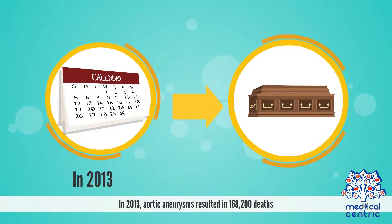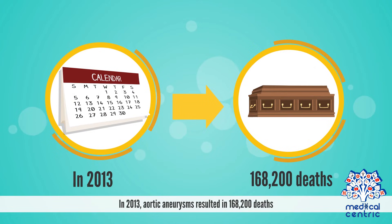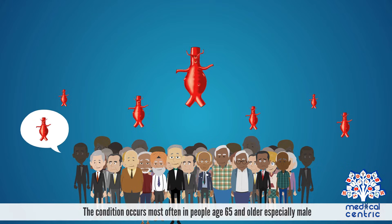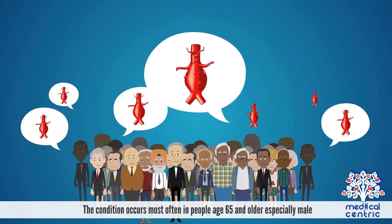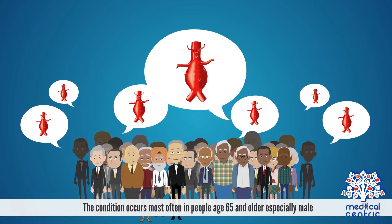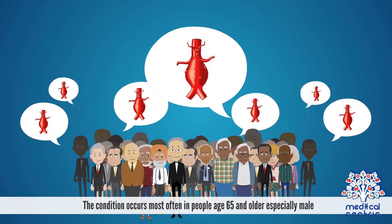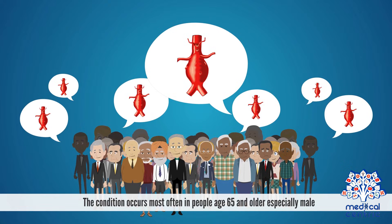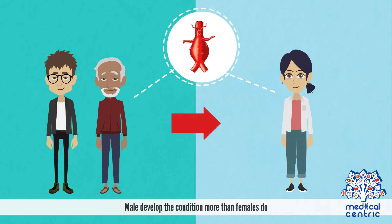In 2013, aortic aneurysms resulted in 168,200 deaths. The condition occurs most often in people aged 65 and older, especially males. Males develop the condition more than females do.